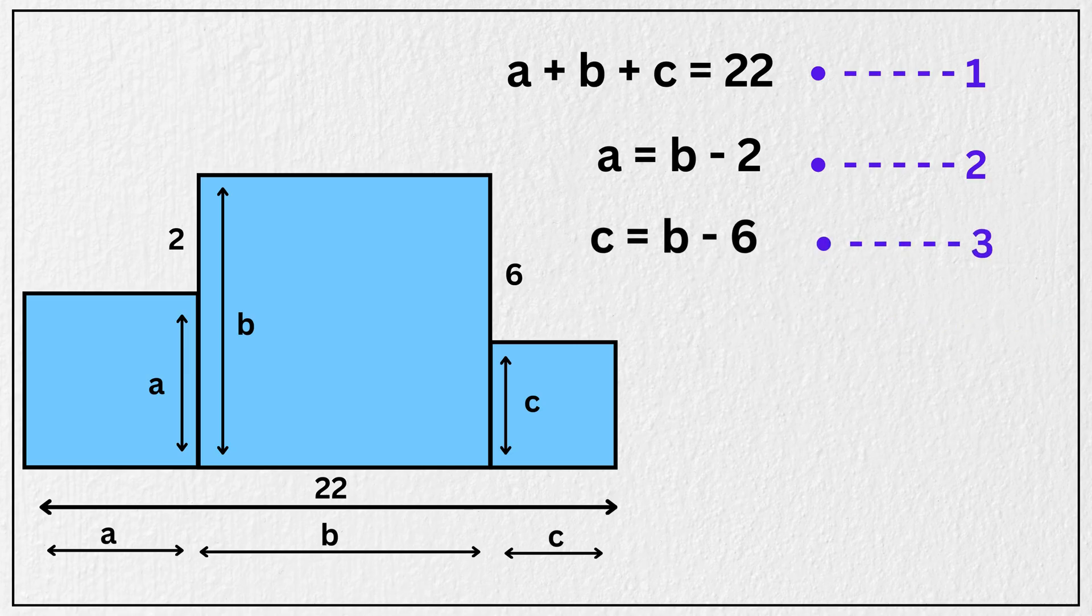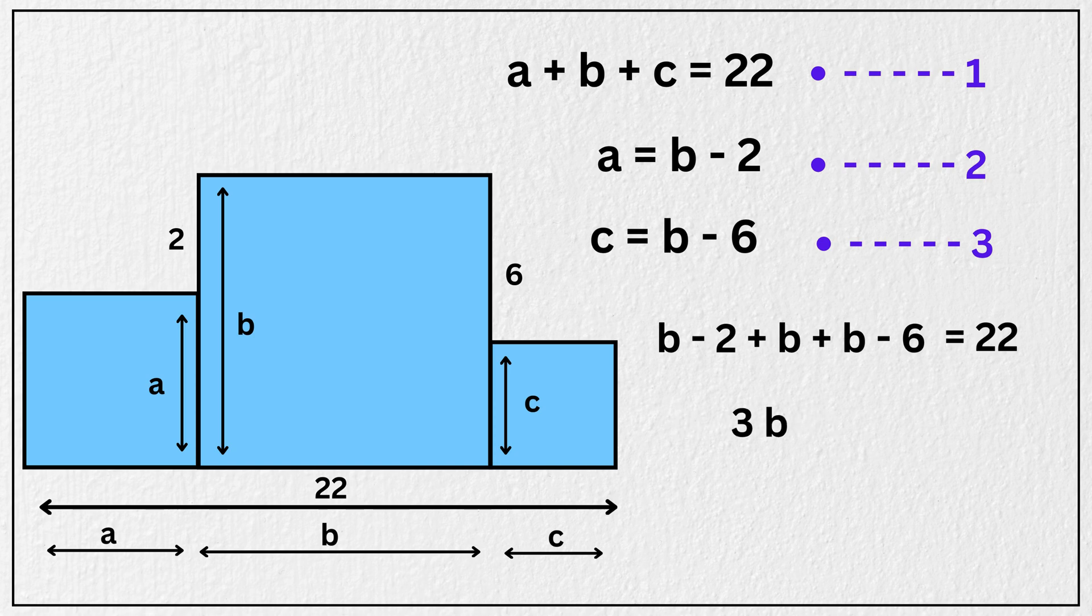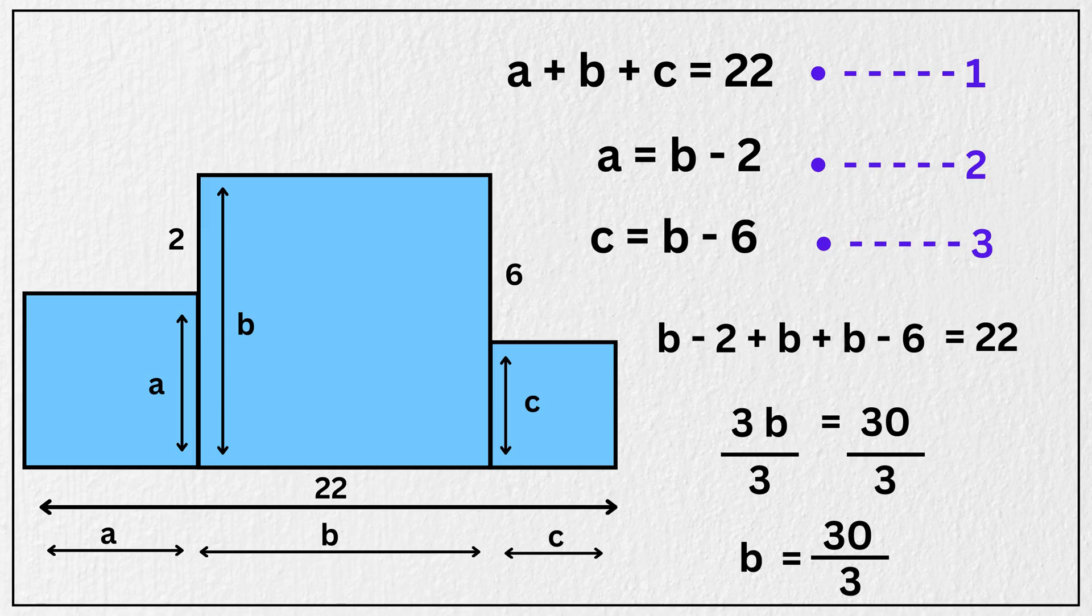Now we have everything we need to move forward. Let's substitute the expressions from the second and third equations into the first equation. So replacing A and C in the first equation, we now have B minus 2 plus B plus B minus 6 is equal to 22. Adding plus 2 and plus 6 to both sides, that gives us B plus B plus B, or 3 times B is equal to 30. Now dividing 3 from both sides, we have B is equal to 30 divided by 3, or B equals 10.